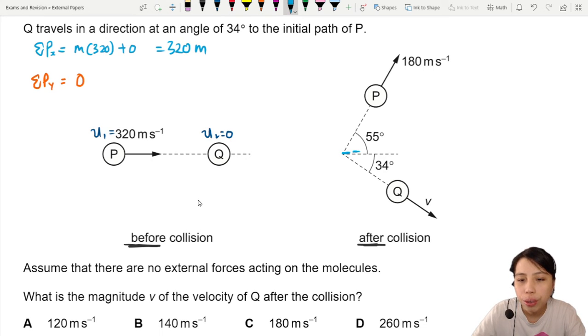So for 55 degrees, we have a horizontal and a vertical. It's gonna be a bit hard to draw. Let me just draw here. Horizontal and vertical for the velocity. And of course, the angle is 55.